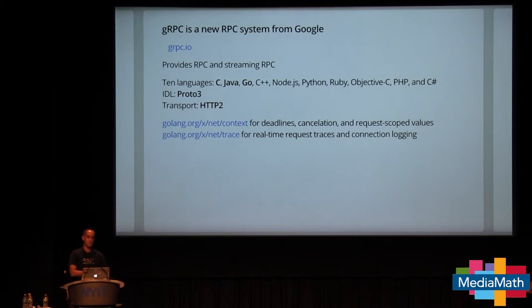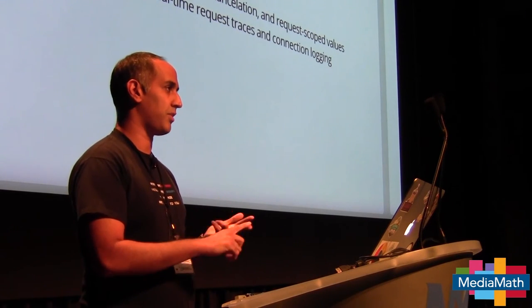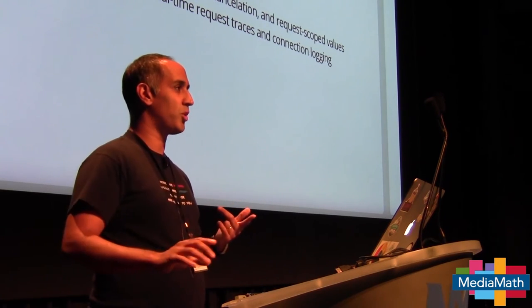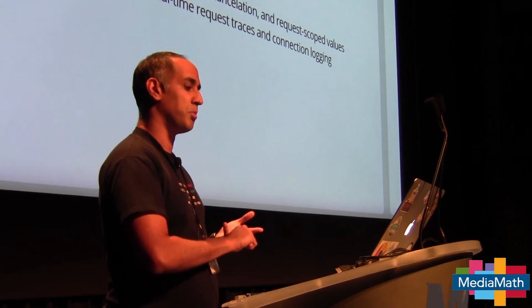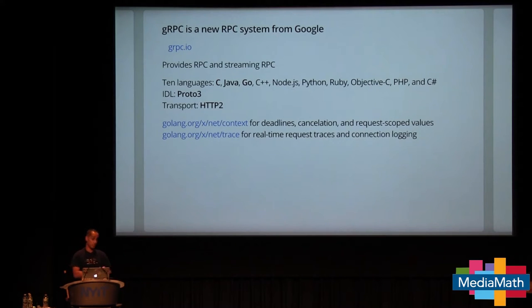GRPC is a new RPC system from Google at grpc.io. It provides both RPC and streaming RPC and is available in 10 languages. The native implementations are in C, Java, and Go — that's C without the plus plus. All other languages are wrappers around the C implementation, but Java and Go have native implementations. This means if you pick up GRPC, you're not locking yourself into Go — it's meant for interoperation among all kinds of programs.